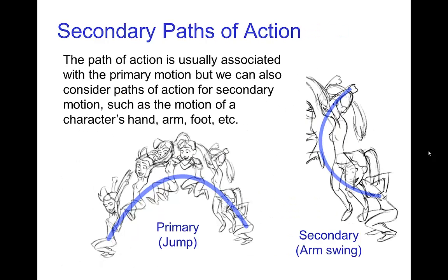Now we'll mostly be thinking about the primary motion and the primary path of action. For a character jumping, that would be basically following the path of their body as it's moving. But there are other secondary motions that occur, like the swinging of the arm.